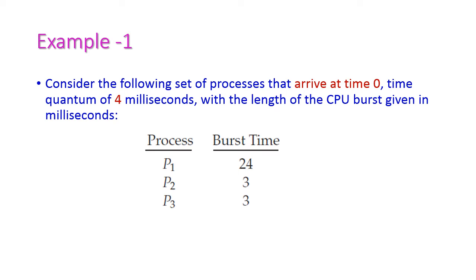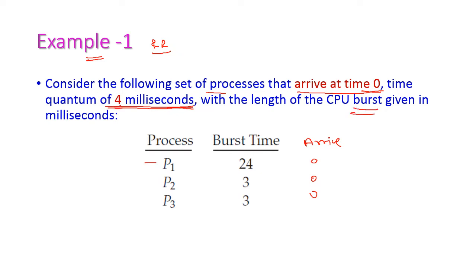Let us see a problem to easily understand the round robin scheduling algorithm. Consider the following set of processes all arriving at time 0. The time quantum is 4 milliseconds, so the CPU will allow each process to execute a maximum of 4 milliseconds. The CPU burst times are: Process 1 — 24ms, Process 2 — 3ms, Process 3 — 3ms.